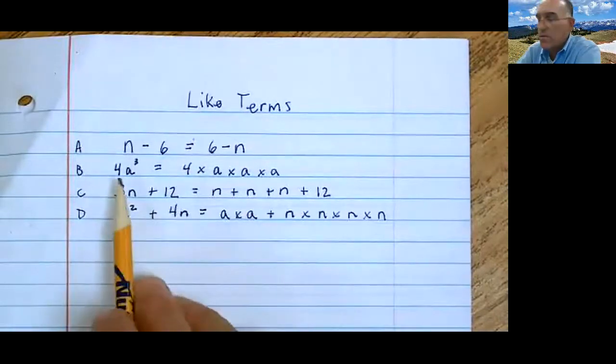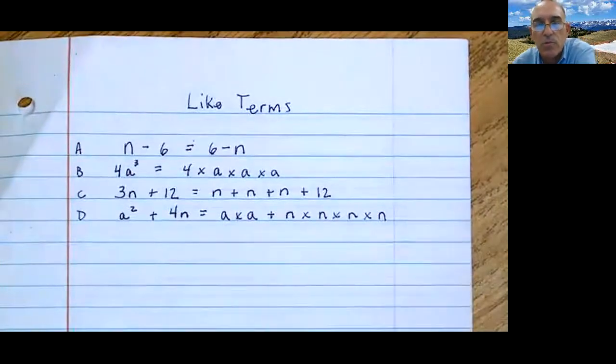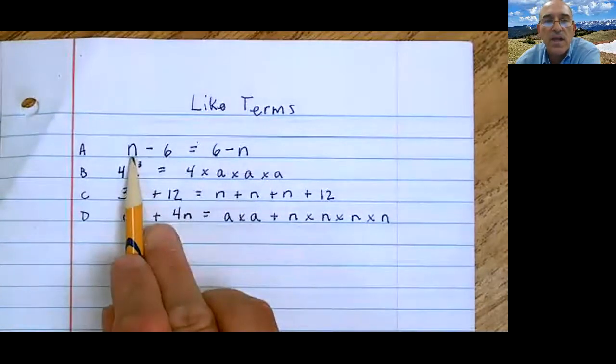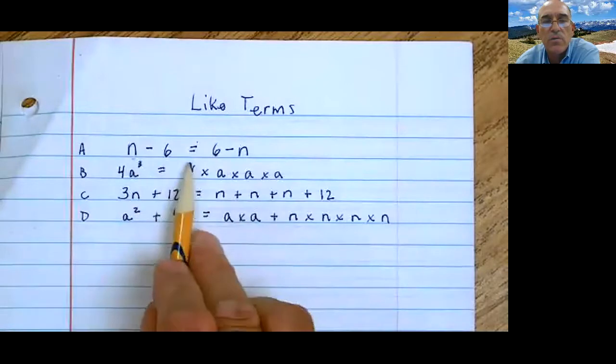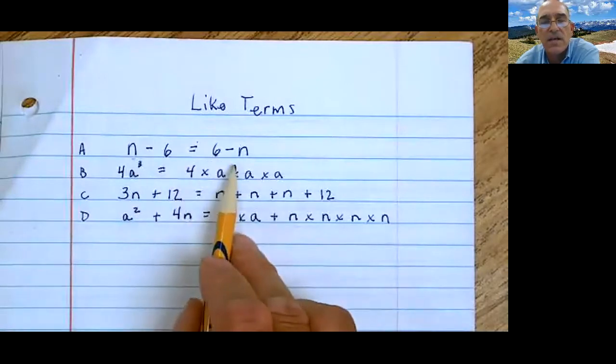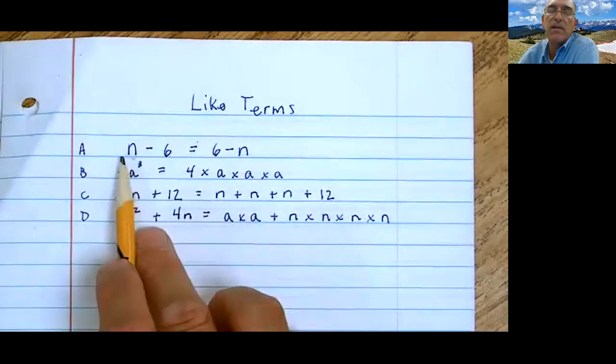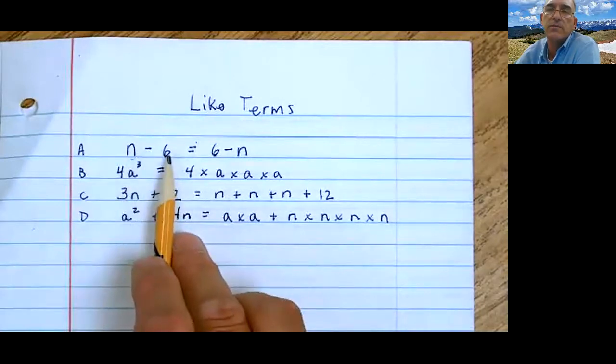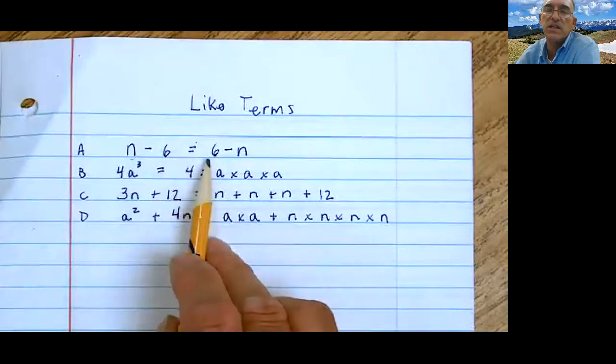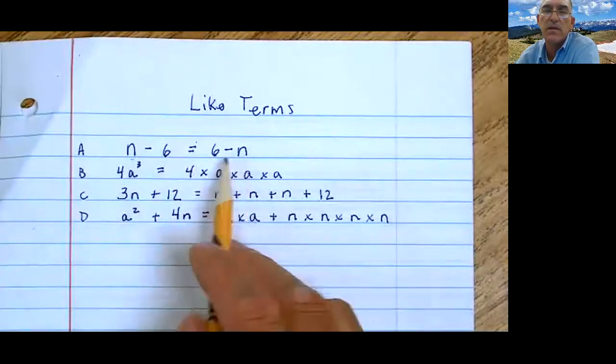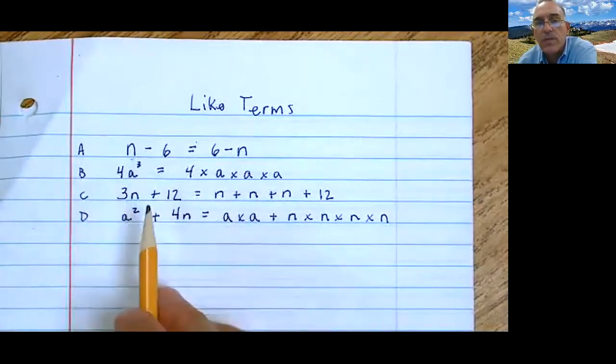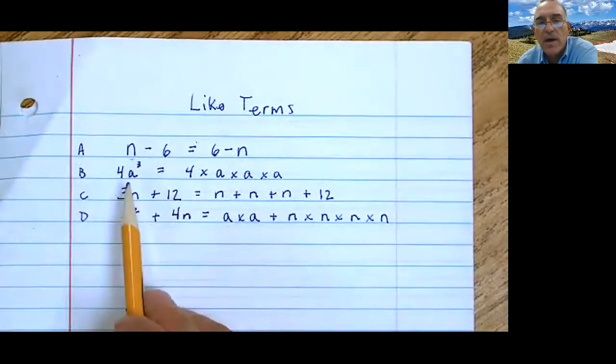So let's slowly go through. I have three problems written down. Is n minus 6 equal to 6 minus n? No. So just take a moment and pretend that n equals 12. Well, is 12 minus 6 equal to 6 minus 12? Of course not. So it's not true. If you understand like terms, you'll be able to identify them no matter how they're represented.